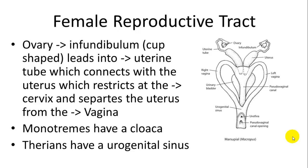The female reproductive tract also shows diversity. In a marsupial female reproductive tract, the vagina is forked and has a middle section which eventually becomes the birth canal. There are two separate uteruses with separate cervixes on each side. From the ovary where ovulation occurs, there is an infundibulum — a cup-shaped part — leading into the uterine tube, which leads into the uterus. The cervix separates the uterus from the vagina, and the vagina leads to the external opening.